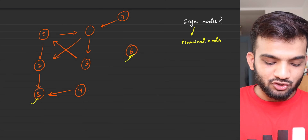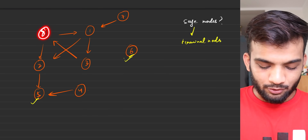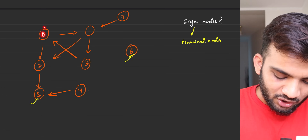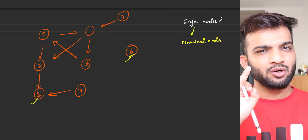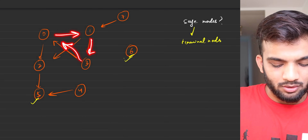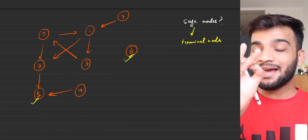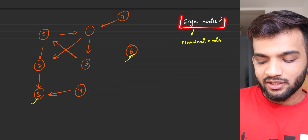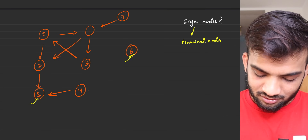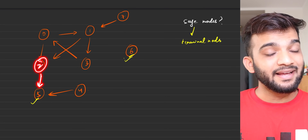Starting from zero: one path does end at a terminal node, but not all paths — one path loops back to zero itself, so zero is not a safe node. Checking one: one path ends at a terminal node, but not all paths, so one is also not a safe node.